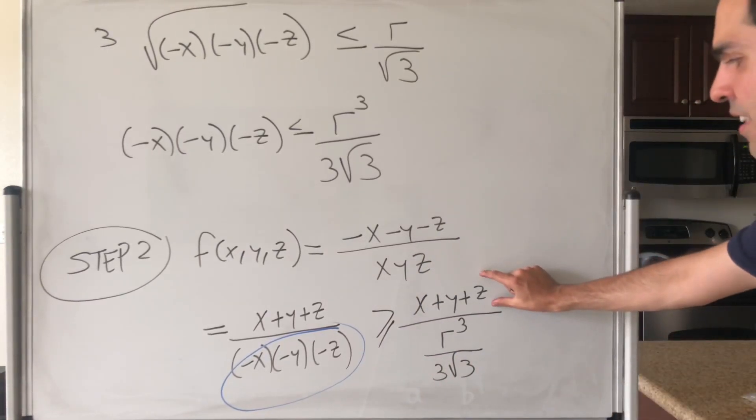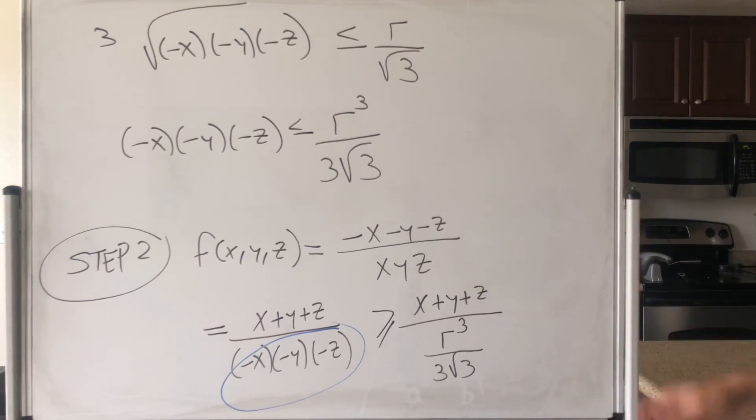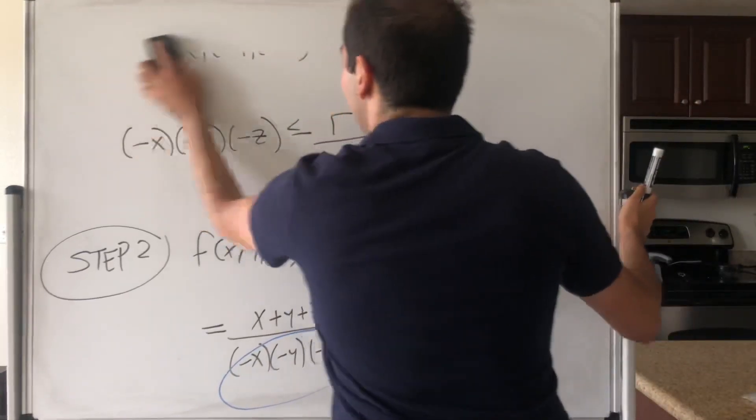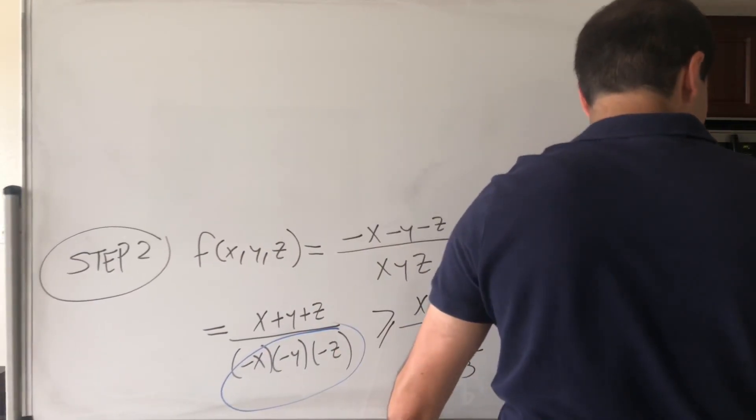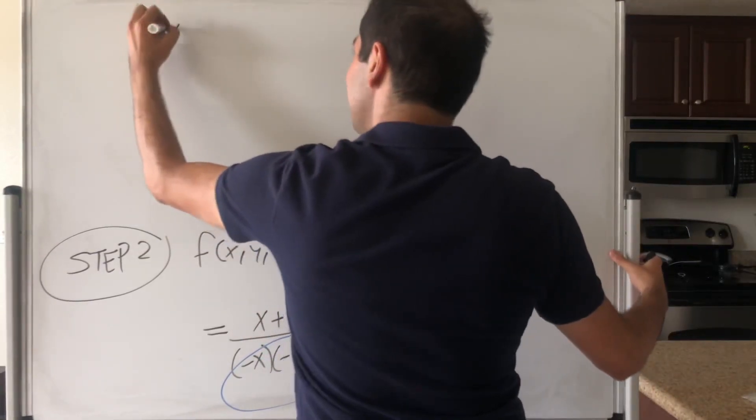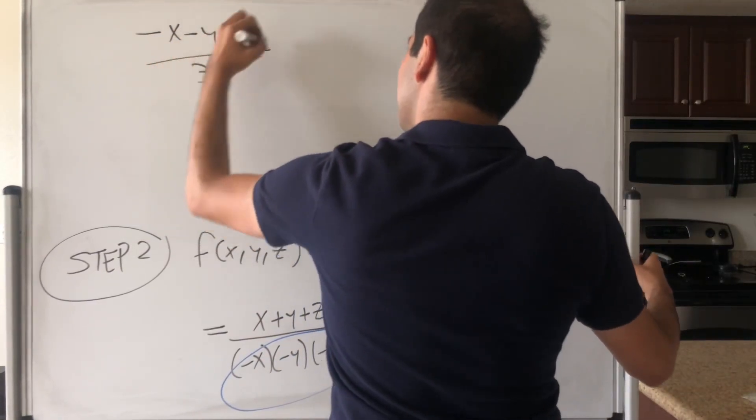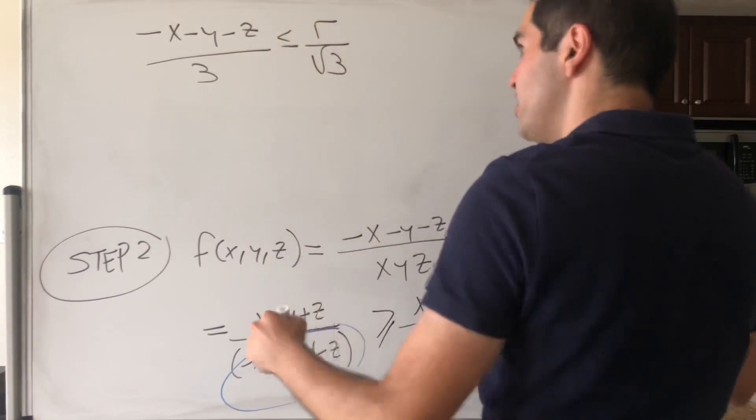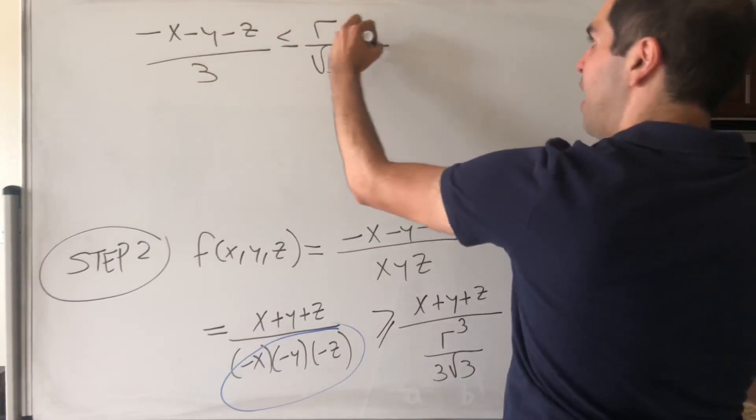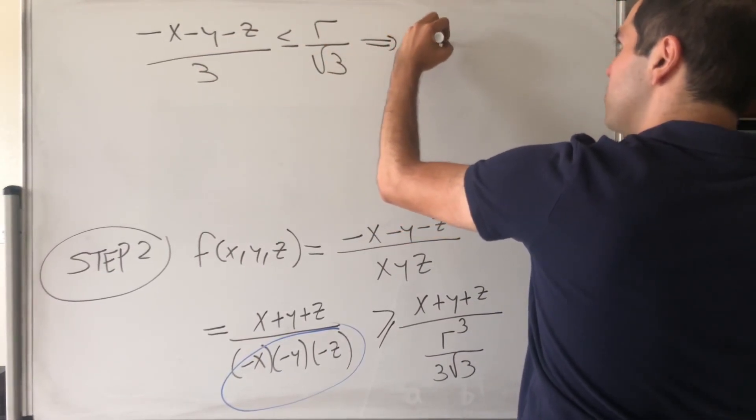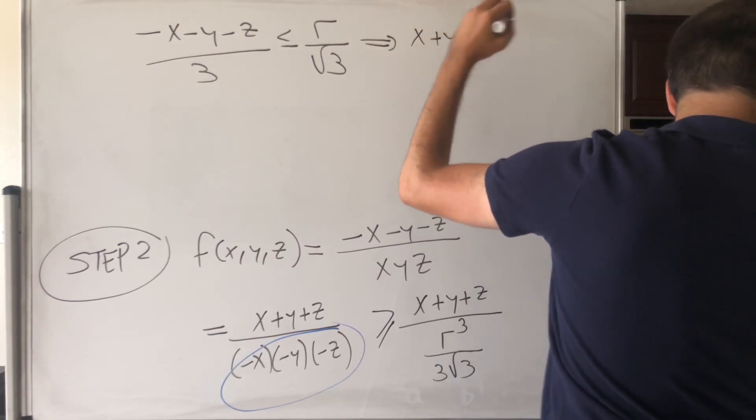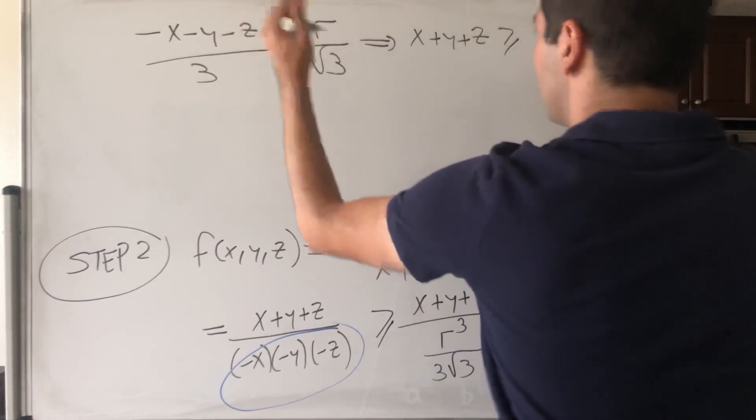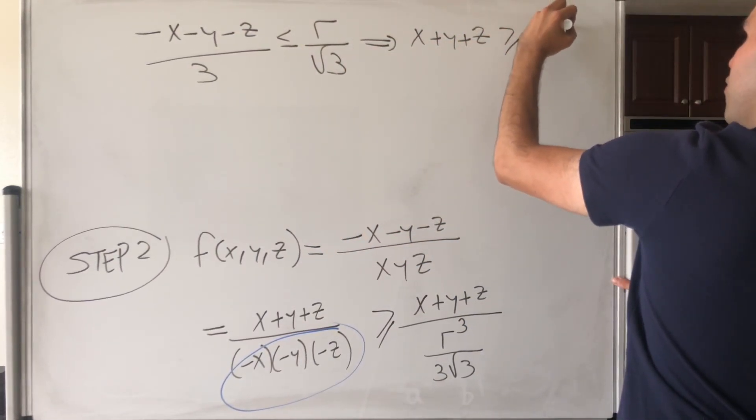But I would like to remind you, in our kind of chain of inequalities, we actually got the following thing. Again, I think that was a Cauchy-Schwarz business. We did get that minus x minus y minus z over 3 is less than or equal to r over square root of 3, which actually means by putting the minus on the other side, we get x plus y plus z is greater or equal to minus square root of 3 r.